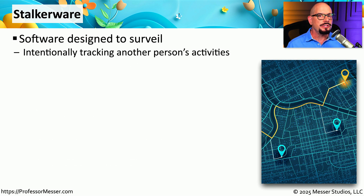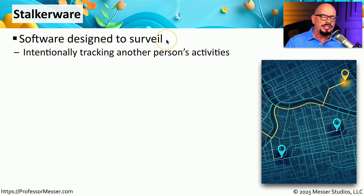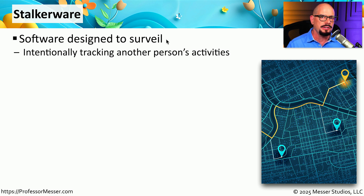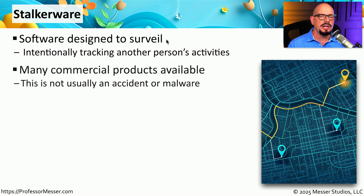A somewhat disturbing type of malware is referred to as stalkerware. This is software that's designed to watch where you're going and what you're doing, and it's designed to report that information back to the attacker. This is software that you can download from the internet from many different companies, and usually it's software that is installed by someone that you happen to know.